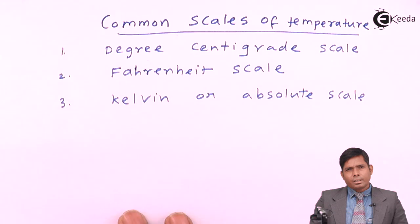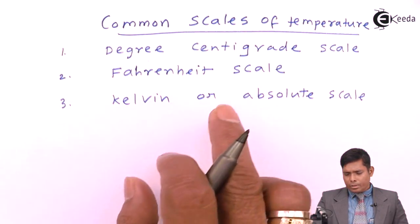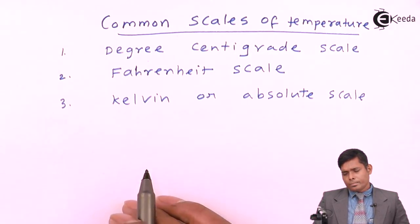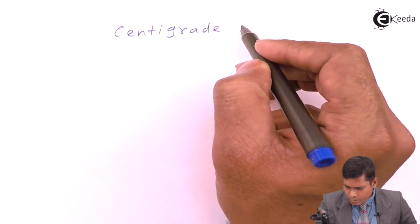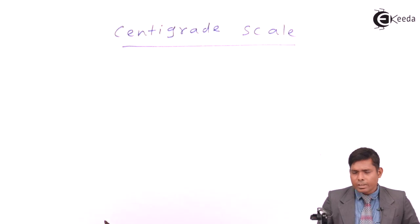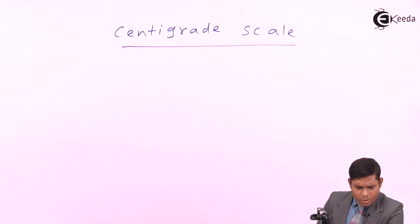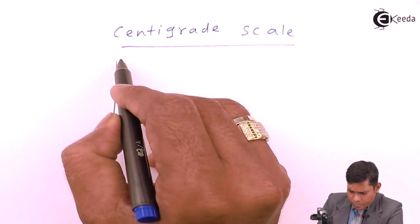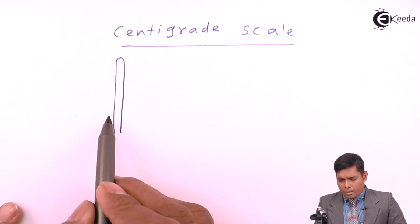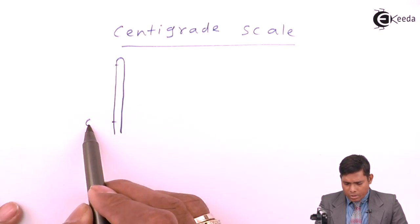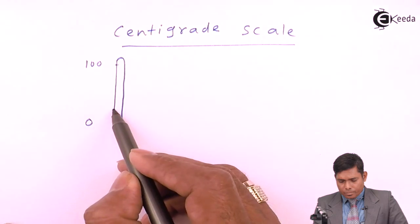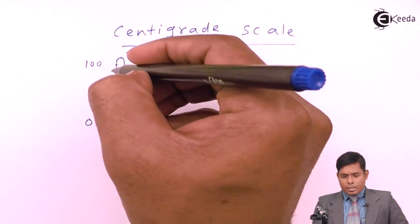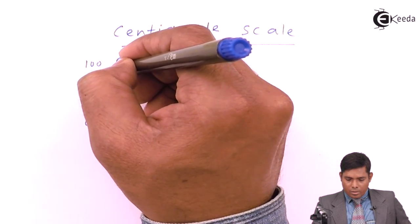The lower point is the ice point. For the degree centigrade scale, also called the Celsius scale, the scale is marked with the lowest reading and the highest reading. The lowest is zero and the highest is 100. So there are graduations in the thermometer — for example, 50 degrees centigrade at the midpoint.